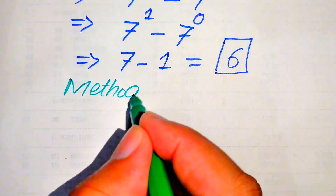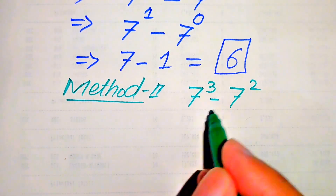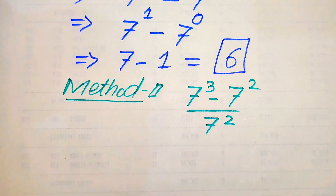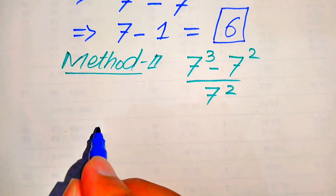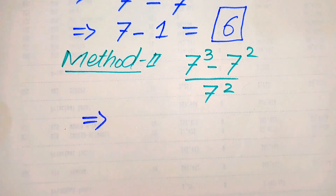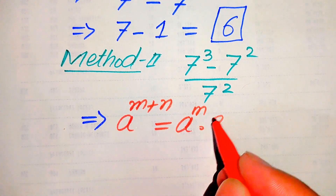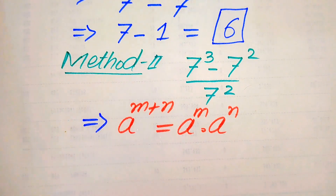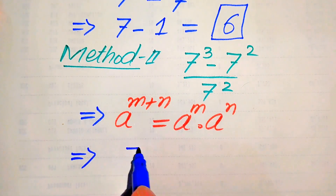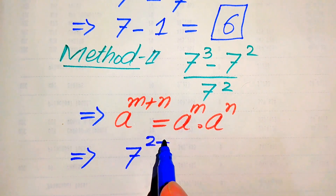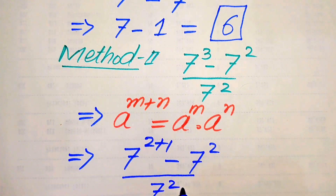In the second method, we first copy down the given question: 7 cubed minus 7 squared, divided by 7 squared. In this method, we use another exponential law: if we have a to the power of m plus n, it equals a to the power of m multiplied by a to the power of n. We apply this by breaking the exponent 3 as 2 plus 1, so the numerator becomes 7 to the power of 2 plus 1, minus 7 squared, all divided by 7 squared.